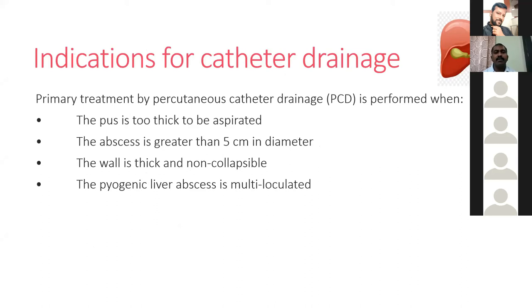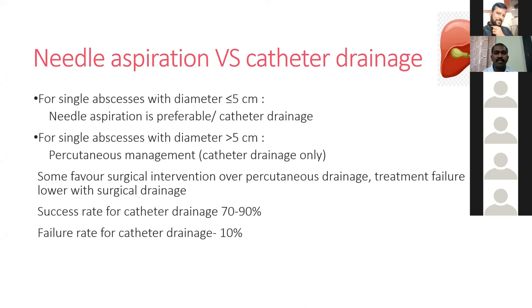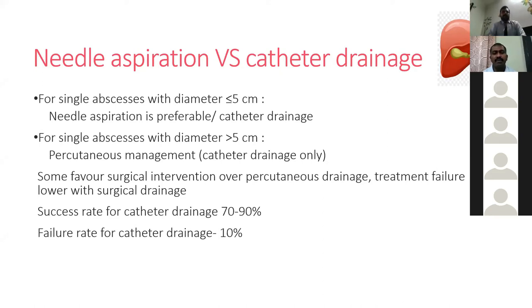Catheter drainage is used when the abscess is very thick, the cavity is more than 5 cm in diameter, or it is a non-pourable, multilocular pyogenic liver abscess. For single abscesses less than 5 cm, needle aspiration is preferable. For single abscesses more than 5 cm, percutaneous drainage has a better advantage, though some recommend surgical drainage for abscesses over 5 cm due to higher success rates.